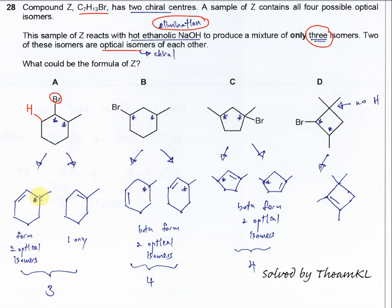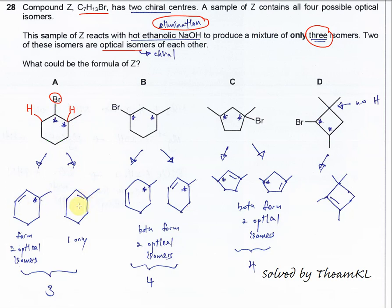This carbon has one hydrogen, one group, another group, and another group, so it is a chiral carbon. Another elimination is also possible: this bromine can be removed with this hydrogen to form a double bond here, giving two products. One of those products has one chiral center, so it forms two optical isomers, while the other product is just one. Total is three.